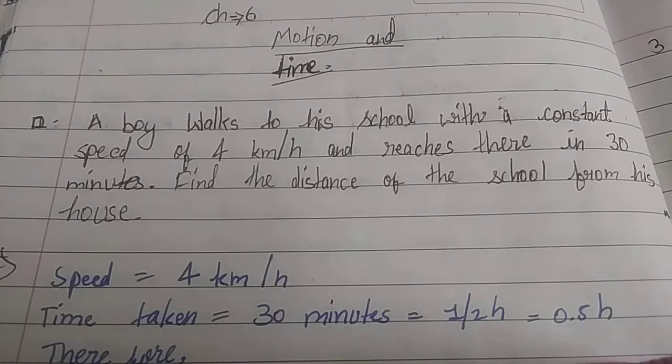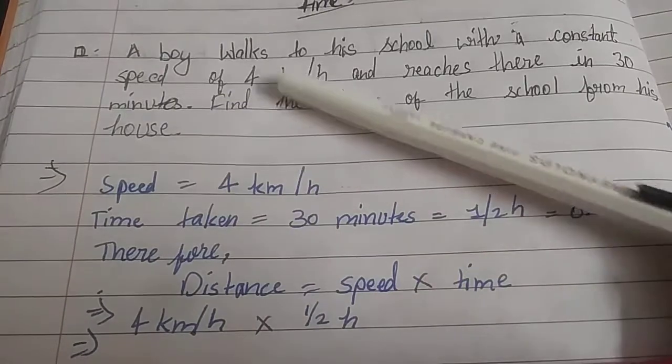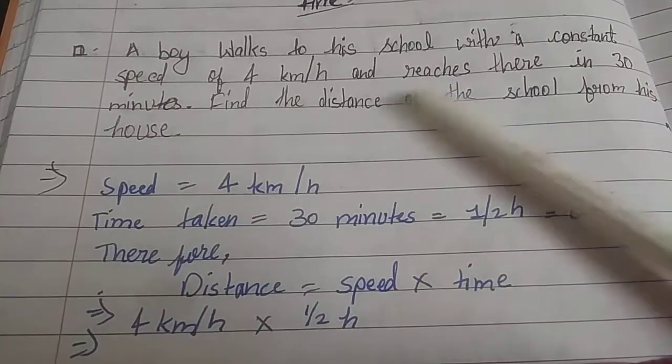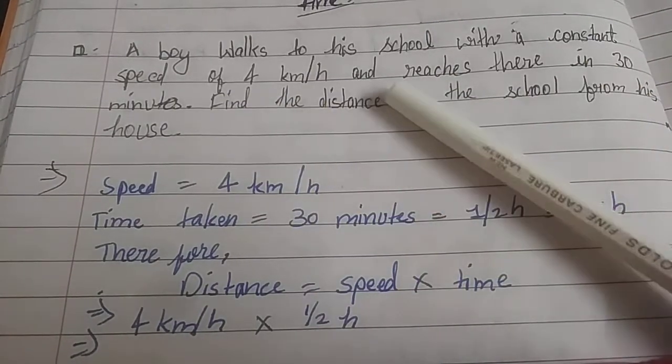Hello friends, welcome back to your channel Study with Sriya. Now we are going to learn Chapter 6, Motion and Time. Let's start our first question. A boy walks to his school with a constant speed of 4 kilometers per hour and reaches there in 30 minutes. Find the distance of the school from his house.